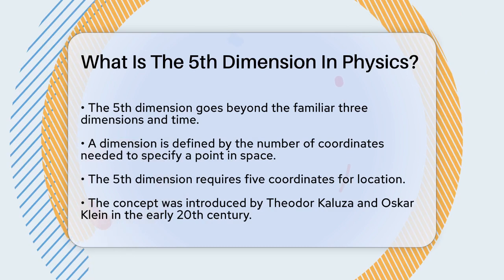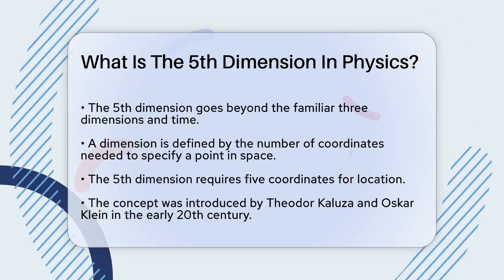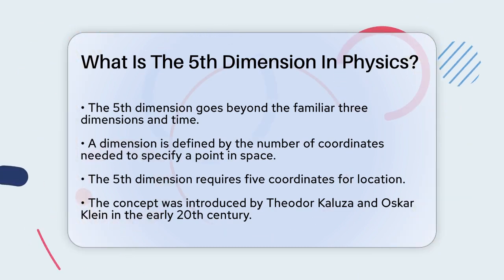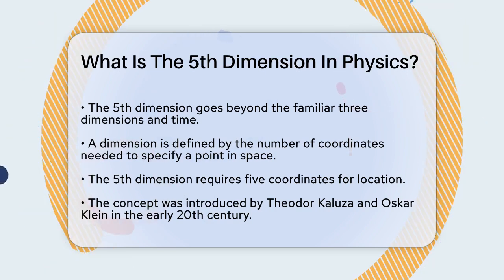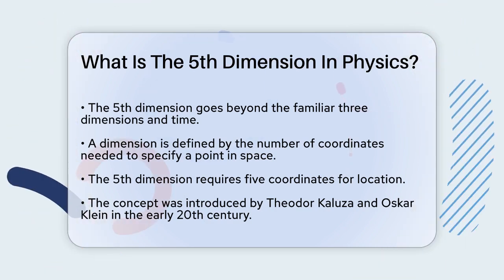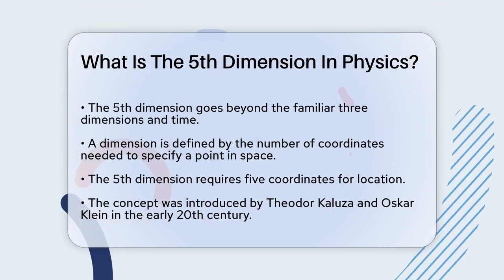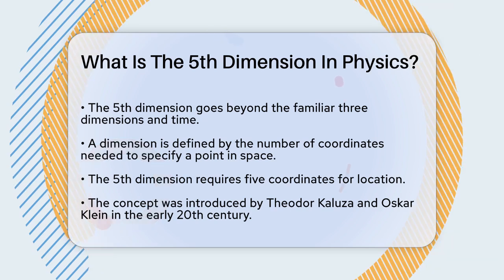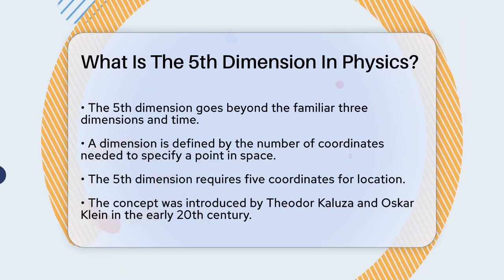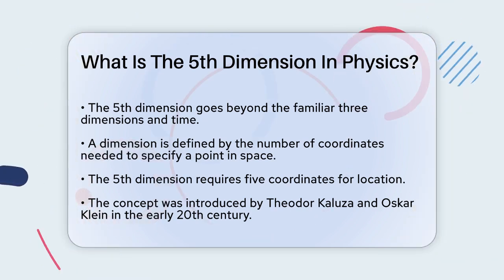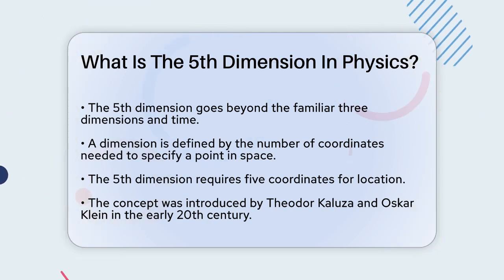In physics, a dimension is essentially the minimum number of coordinates needed to specify a point in space. For example, to locate a point on a line, you need one coordinate. For a surface, you need two. And for a solid object, you need three. Extending this logic, a five-dimensional space requires five coordinates.